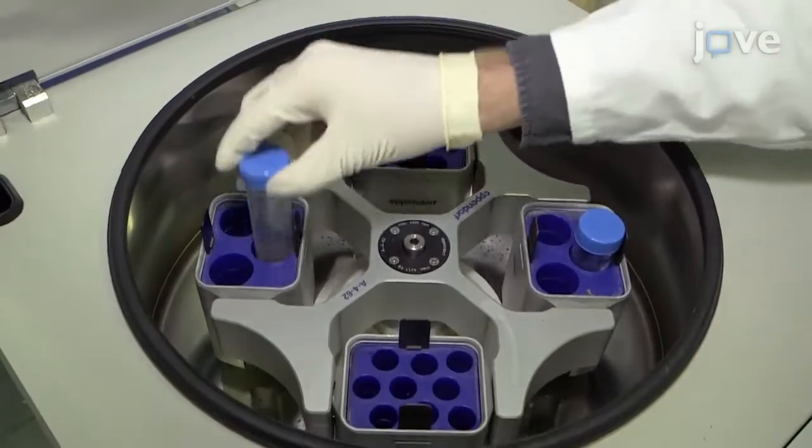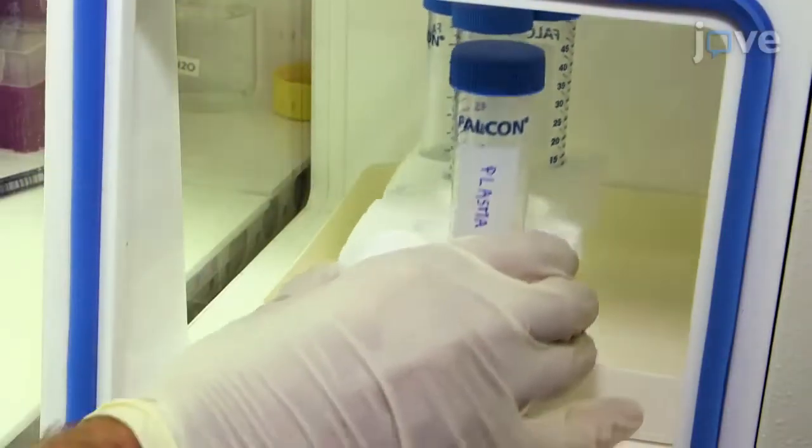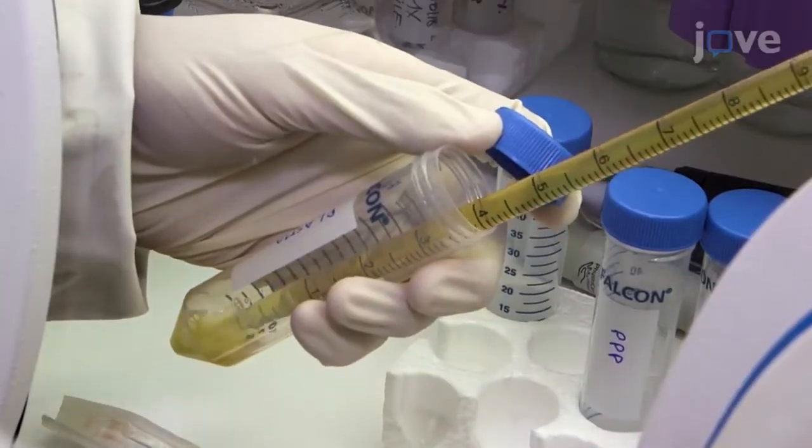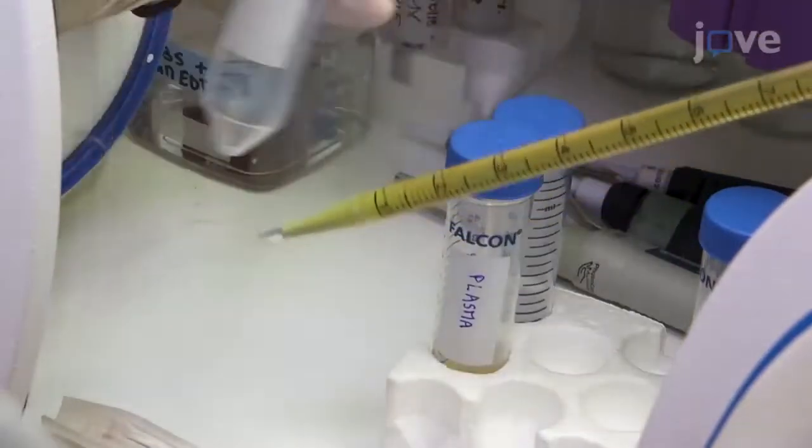After this, remove the tube of plasma from the anoxic cabinet and centrifuge it at 2,900 g for 20 minutes. Taking care not to disrupt the pelleted platelets, transfer the tube to the anoxic cabinet and pipette the platelet-poor plasma into a fresh 50 mL tube.